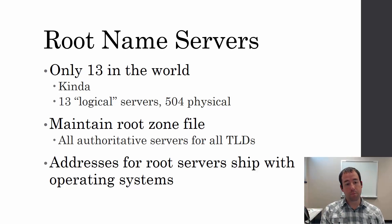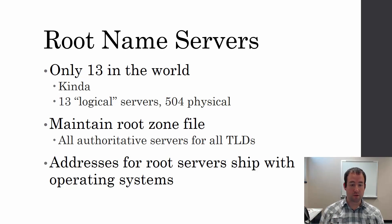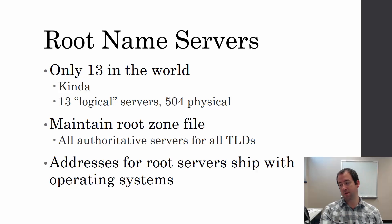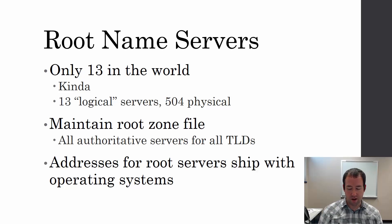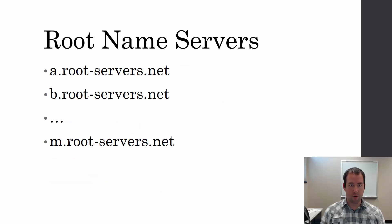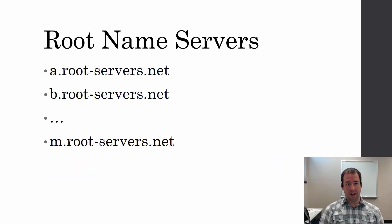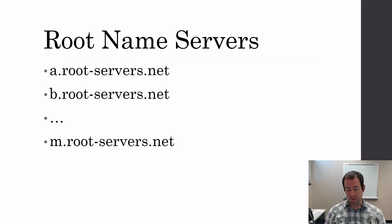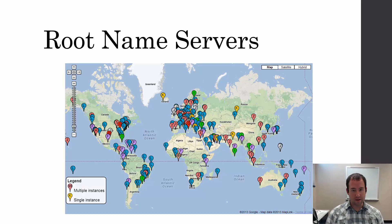To find out where the root servers are, you typically use a small file called the root hints file, which points to those root name servers. That's shipped in your operating system or in the software you're using to connect to the network. The domain names for those root servers are a.root-servers.net through m.root-servers.net. And here's that map.